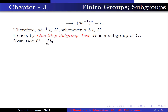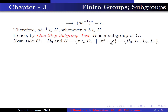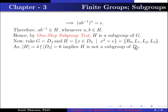Now take G equal to D3 and H containing elements x belonging to D3 such that x squared equals identity, which equals {R0, L1, L2, L3}. The order of H is 4, which does not divide the order of D3, which is 6. This implies H is not a subgroup of D3.